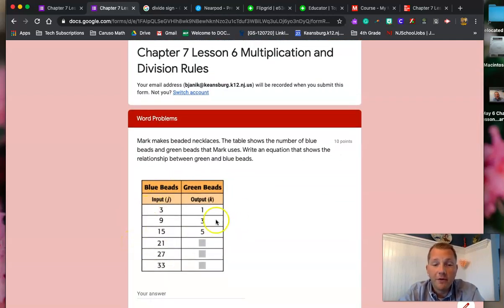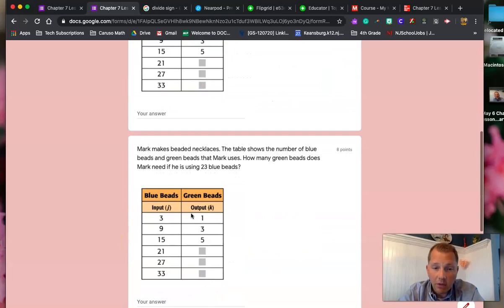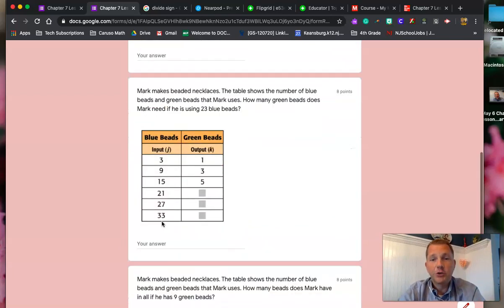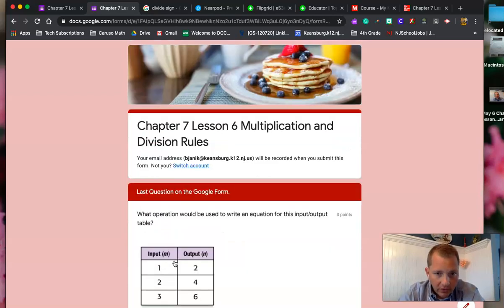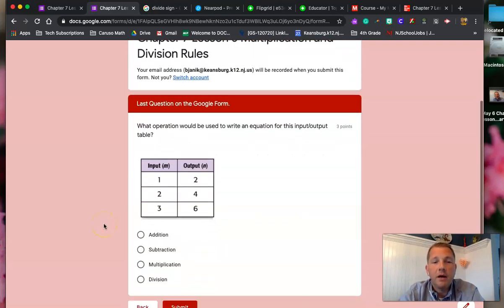For this word problem, it refers to this chart. It's the same chart. There's just three separate questions that go along with that chart. And then this one right here, what operation would best use to write an equation for this input and output chart? Multiple choice. When you're done with this, finish off with creating the input-output charts in the Nearpod. There's one last slide that I want you to do.